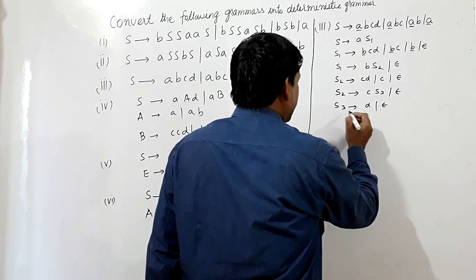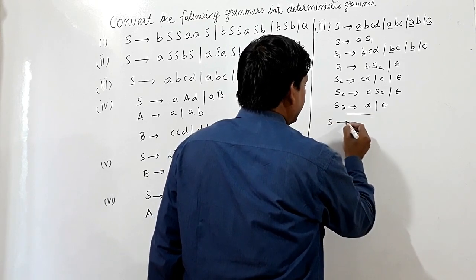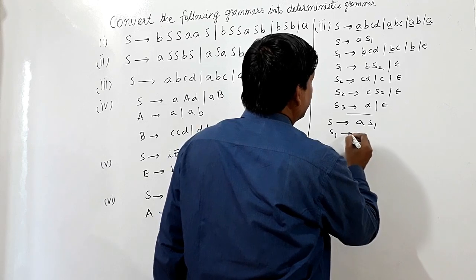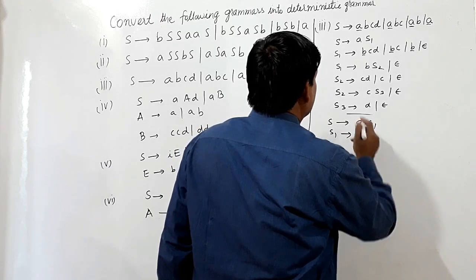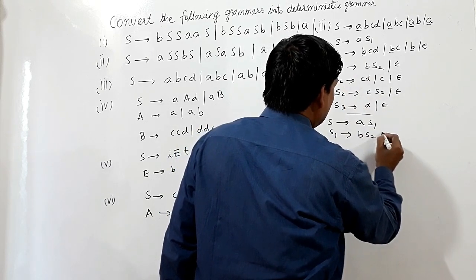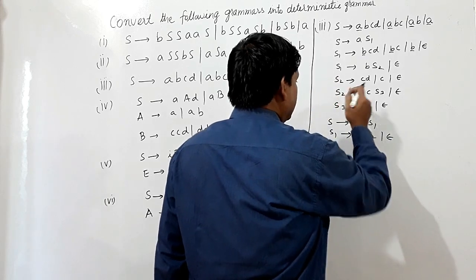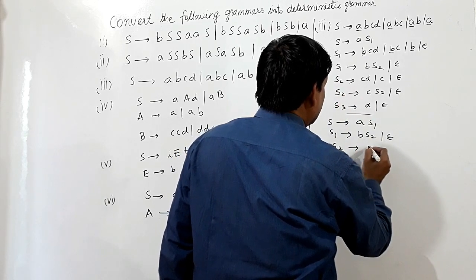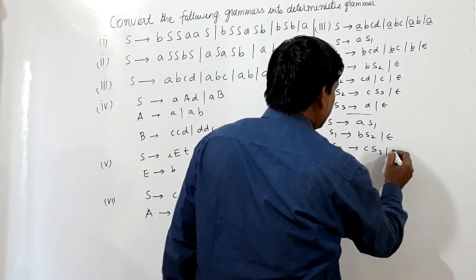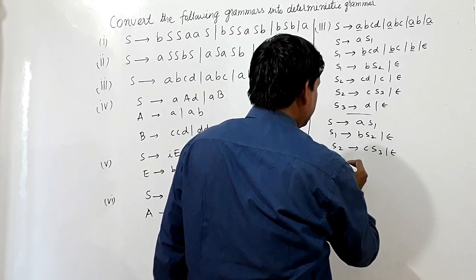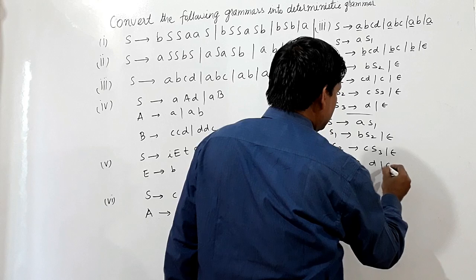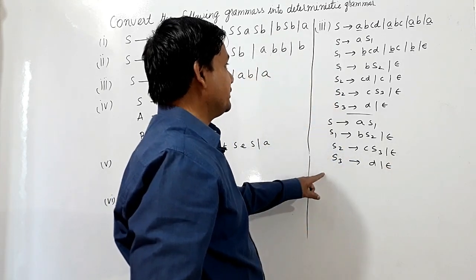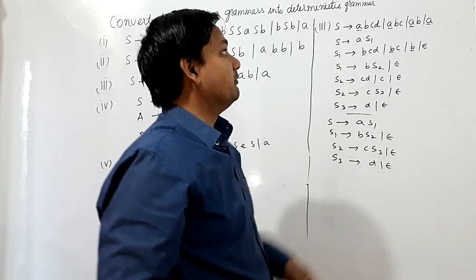So the whole grammar can be written as: S produces AS1, S1 produces BS2 or epsilon, S2 produces CS3 or epsilon, and S3 produces D or epsilon. This is the deterministic grammar corresponding to this grammar.